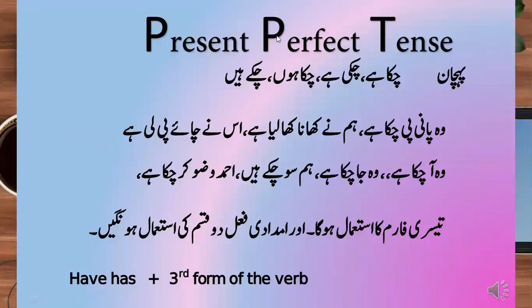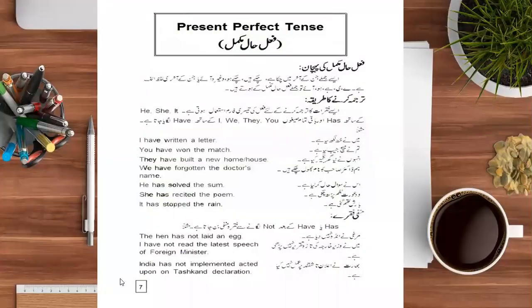Here we'll be using the helping verb. The helping verb in this type of tense is has or have, used with the third form of the verb. Has or have depends on the subject — he, she, it will take has, while I, we, they, you will take have.